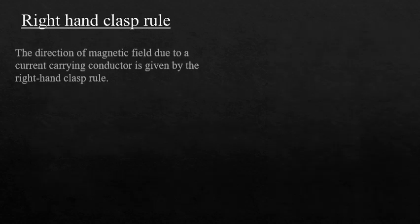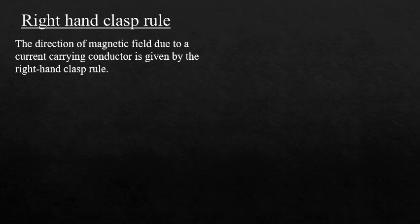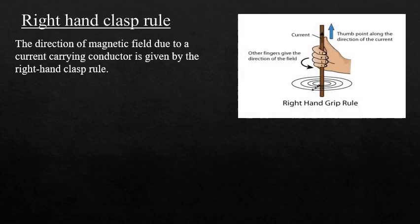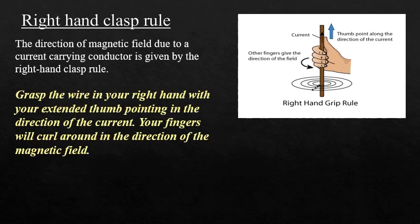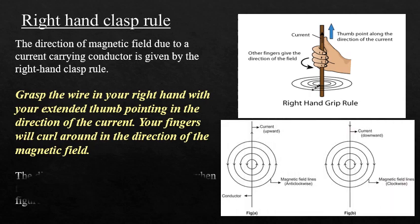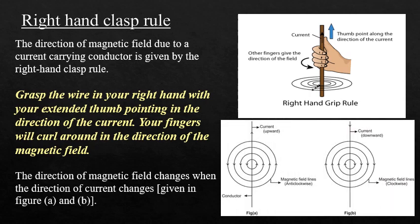Right Hand Clasp Rule: The direction of magnetic field due to a current carrying conductor is given by the right hand clasp rule. It states that if you grasp the wire in your right hand with your thumb extended pointing in the direction of current, then the curl of the fingers gives the direction of magnetic field. If the current is upwards, the magnetic field lines form anticlockwise; if the current is downwards, the magnetic field lines are formed clockwise.